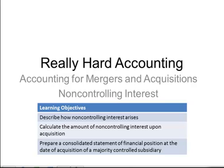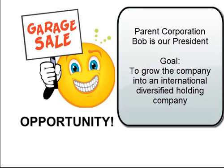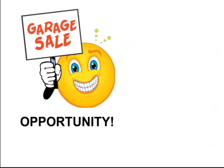Welcome back one more time to the course in Really Hard Accounting. Today, we're going to continue with our theme of accounting for mergers and acquisitions, only from the point of view of situations where a non-controlling interest is involved. Without further ado, let's get right into it. We once again return to Bob, the president of Parent Corporation, on his bid to grow the company into a diversified international holding company. With the economy in turmoil and valuations at historic lows, Bob seeks new investment opportunities.